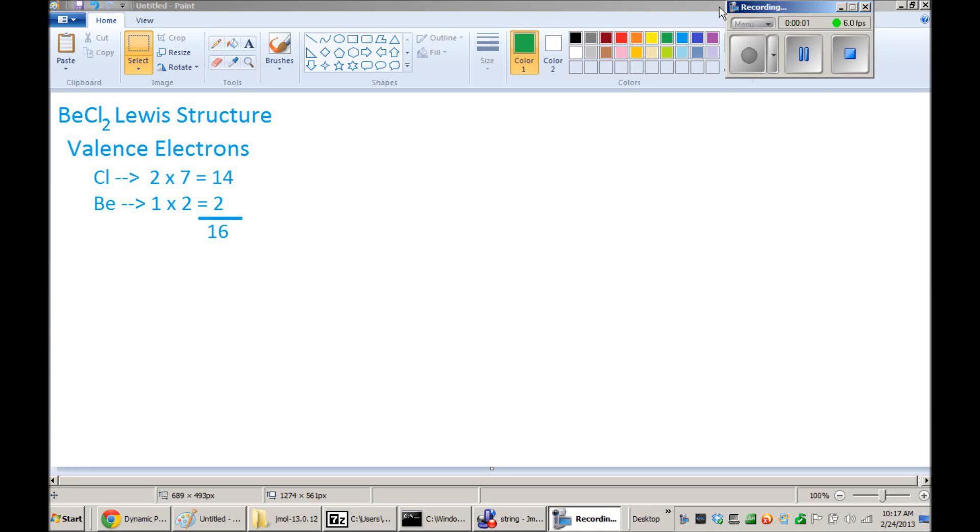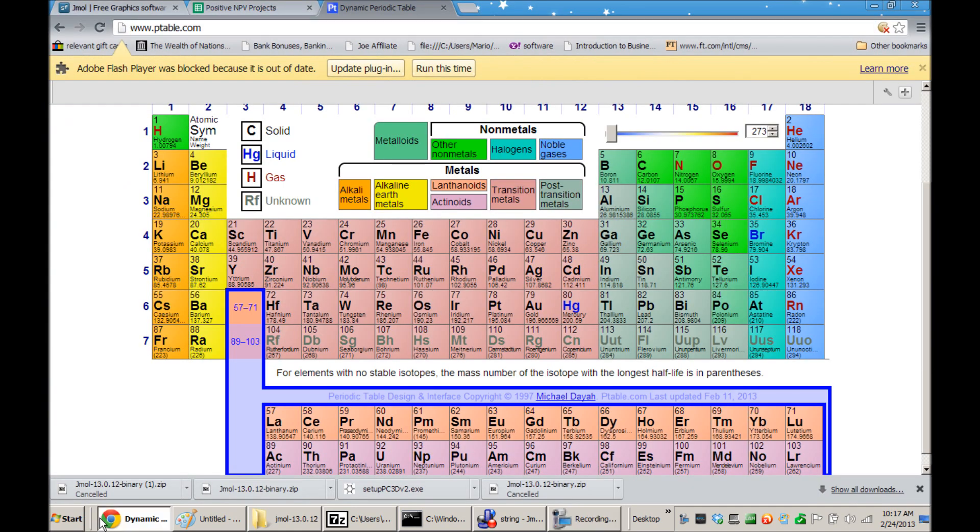Here's the Lewis structure of beryllium chloride. If you look at the periodic table, we can look at each of the contributing elements in the molecule.